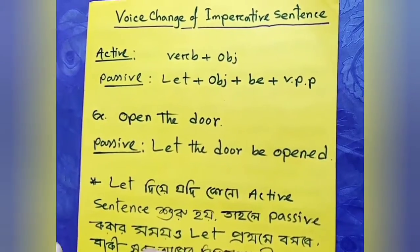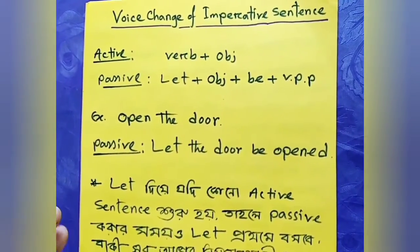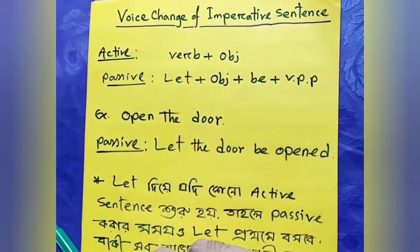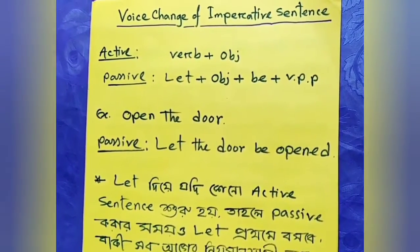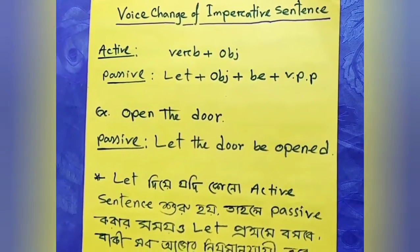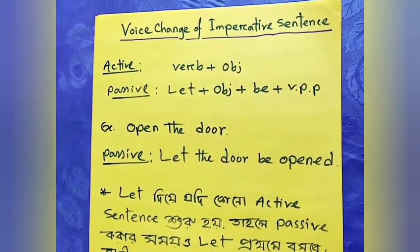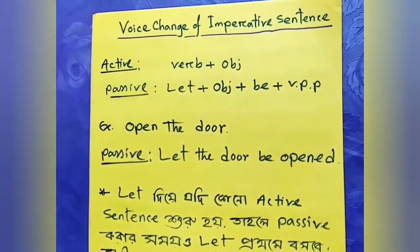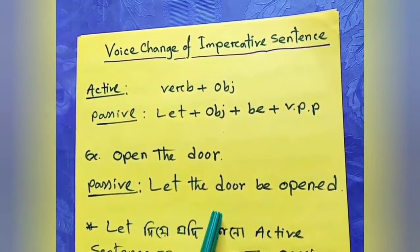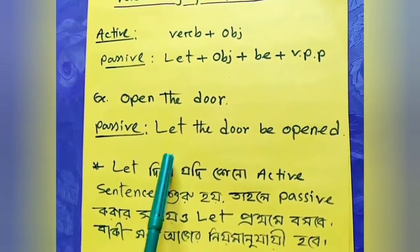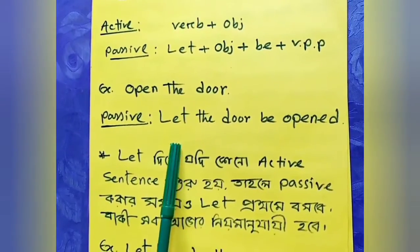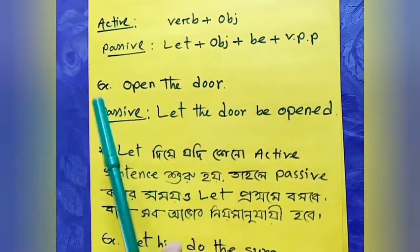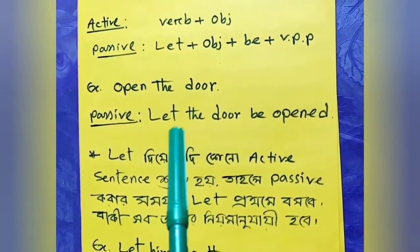Imperative sentences use a specific structure in literary language. When someone directly commands another — for example, if your brother or father wants the door opened and says it directly — you use the imperative sentence structure. So we use: 'let the door be opened,' meaning 'ddrjati khuilaya dao hok.' Similarly, 'open the door' and 'shut the door' follow the same pattern.